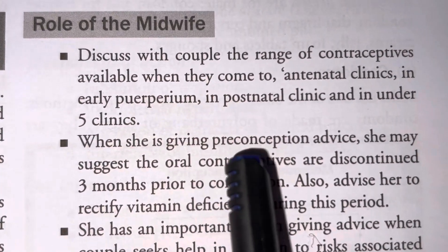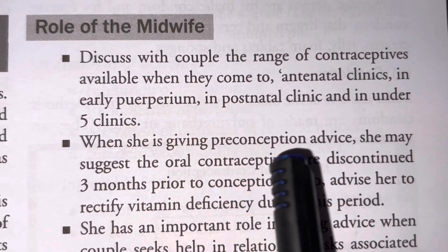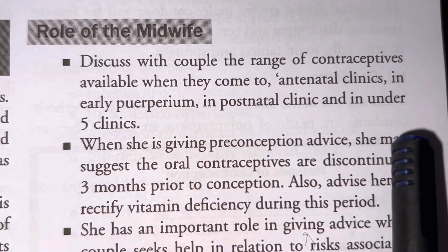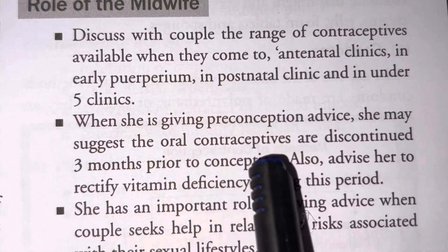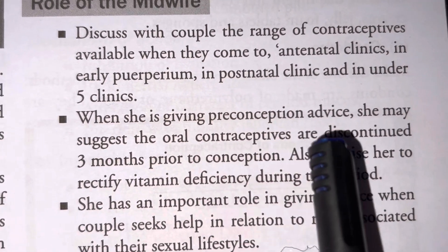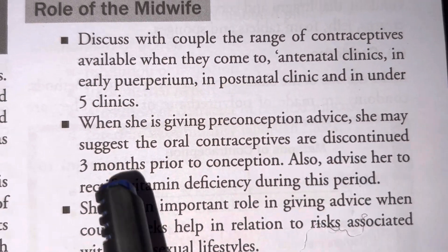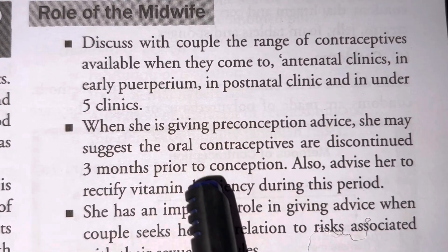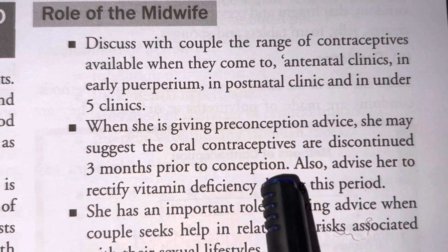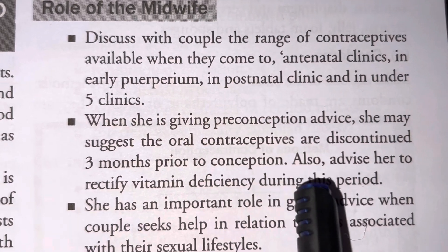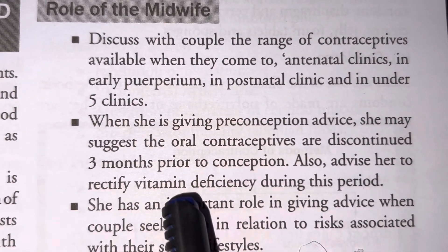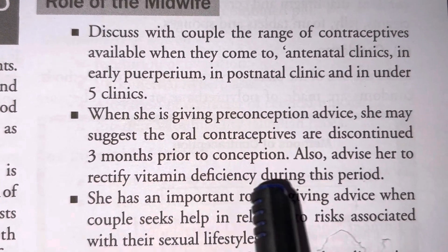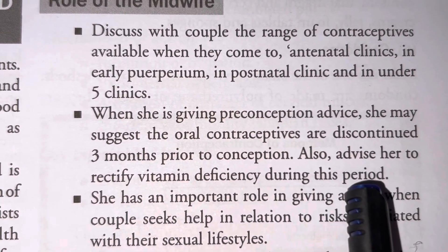When giving preconception advice, she may suggest that oral contraceptives are discontinued three months prior to conception. She should also advise the woman to rectify any vitamin deficiency during this period.